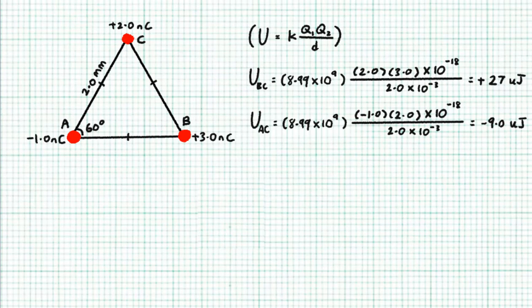We can now calculate the EP stored between charge A and C using the same formula KQQ over D and it turns out to be a negative EP, negative 9.0 µJ. It's a negative EPE because A and C are unlike charges. When we have unlike charges we store negative EP. In fact the closer they are the more negative the EPE.